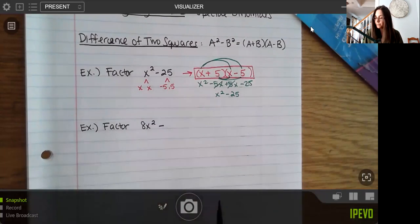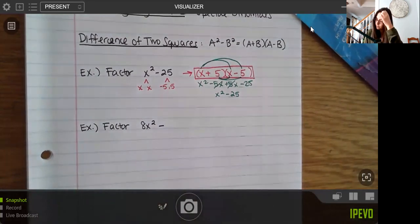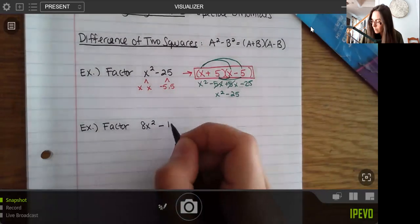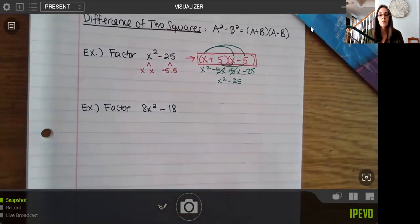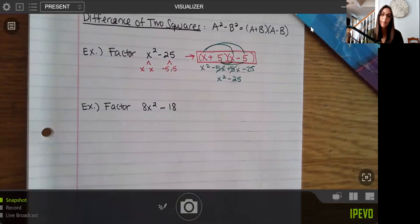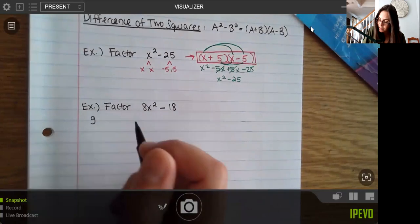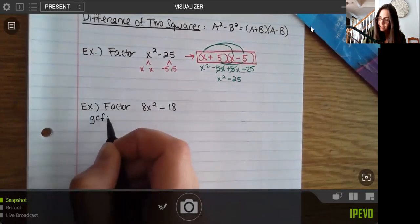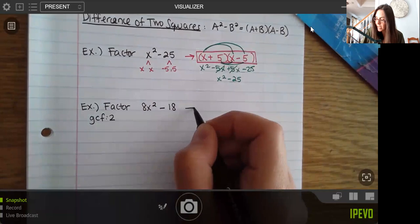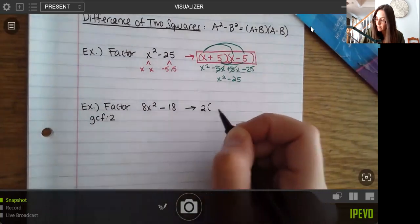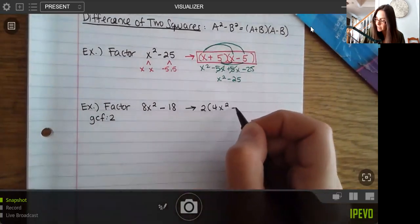Let's do another example. So this one's a little bit different. And if you look at it, you're probably saying, okay, Professor Pollard, that is not a perfect square. 8 and 18 are not perfect squares. But remember, whenever you're factoring, the first thing you should do is look for a GCF. This one didn't have anything here besides 1. But my GCF does exist here. There is a GCF of 2. So the first thing I'm going to do is take that GCF out. And then I'm left with 4x squared minus 9.